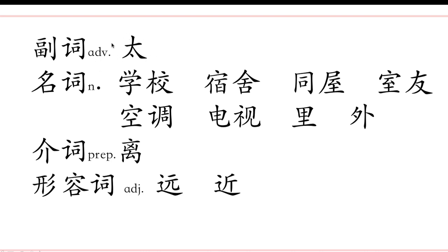The first word is 太, an adverb. There are also many nouns, prepositions and adjectives. Now please repeat after me: 太, 学校, 宿舍, 同屋, 室友, 空调, 电视, 里, 外, 离, 远, 近.